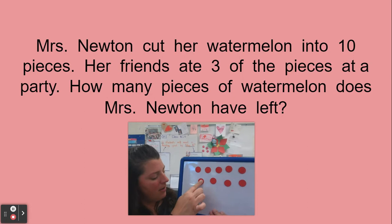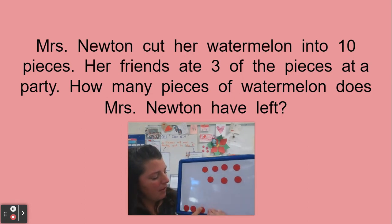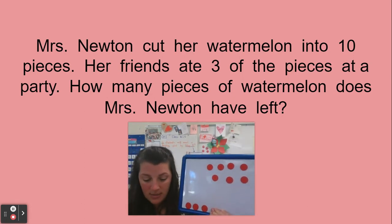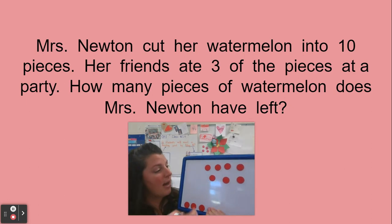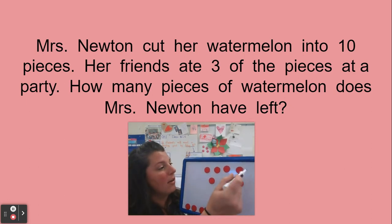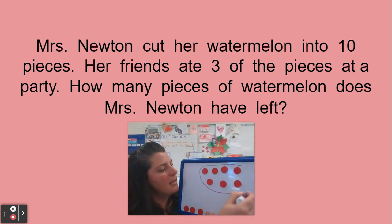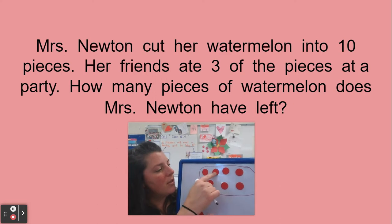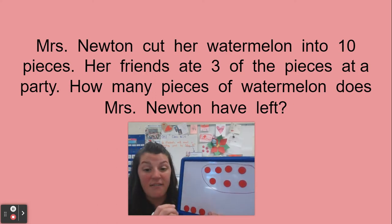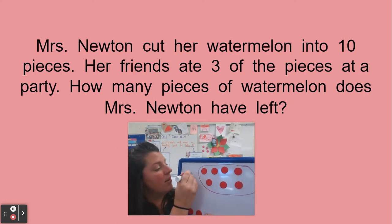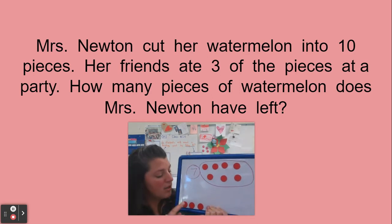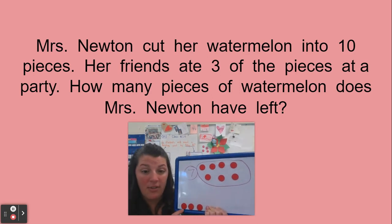We count off three pieces eaten — one, two, three. That number of watermelon that Mrs. Newton still has got smaller. These are the pieces that she still has: one, two, three, four, five, six, seven. So my answer should have been seven. Some friends showed me that with their counters.